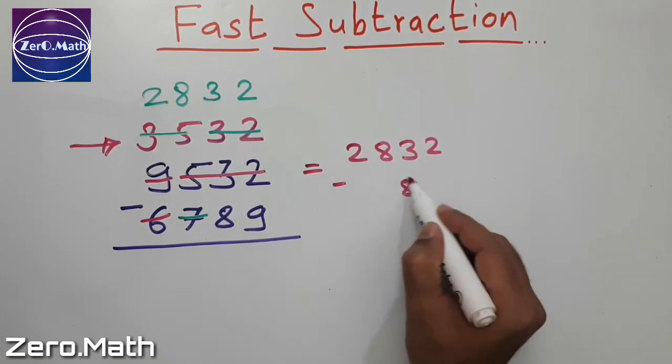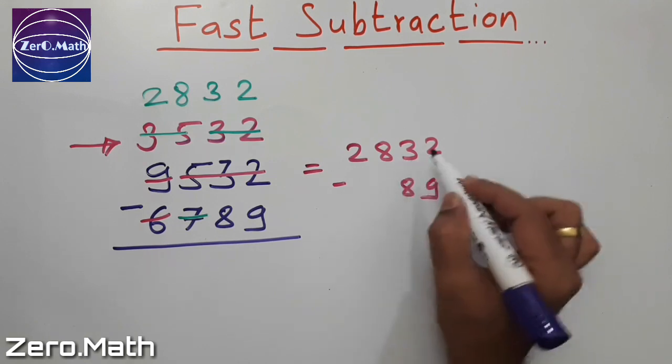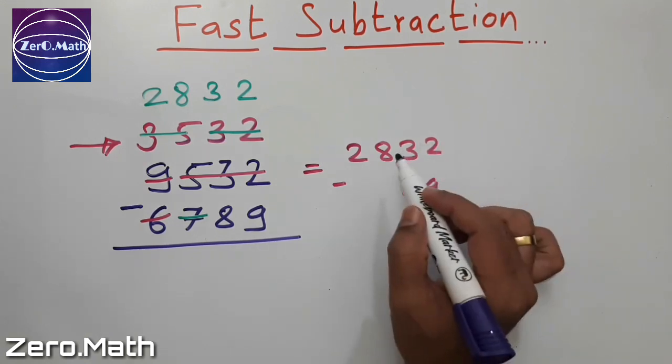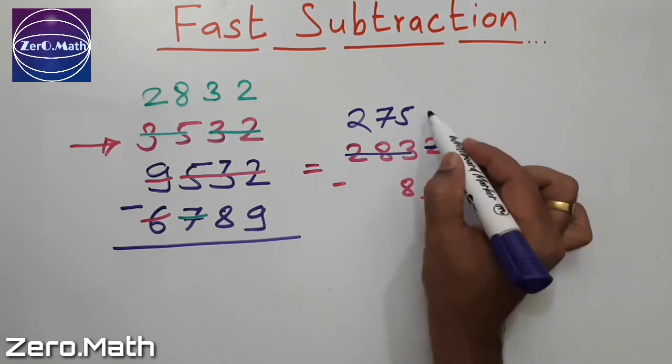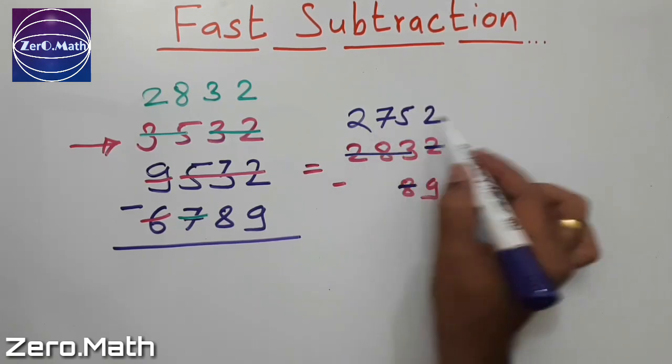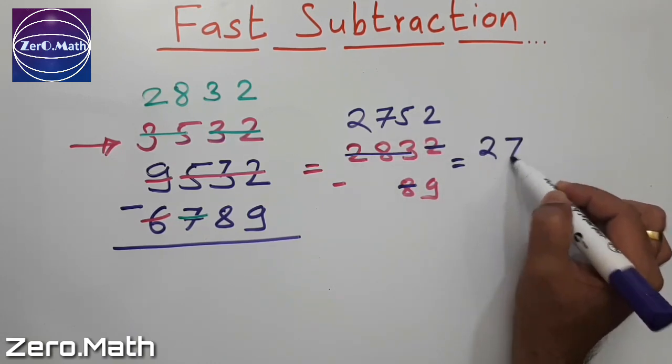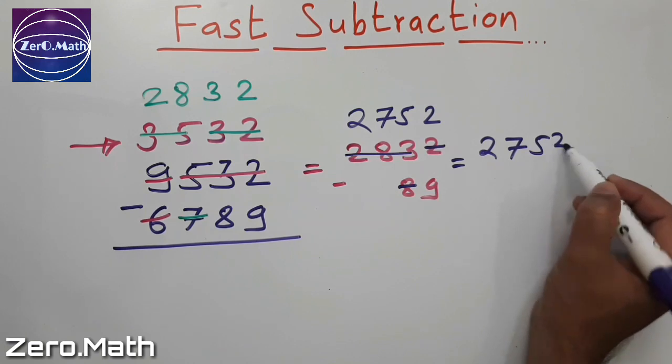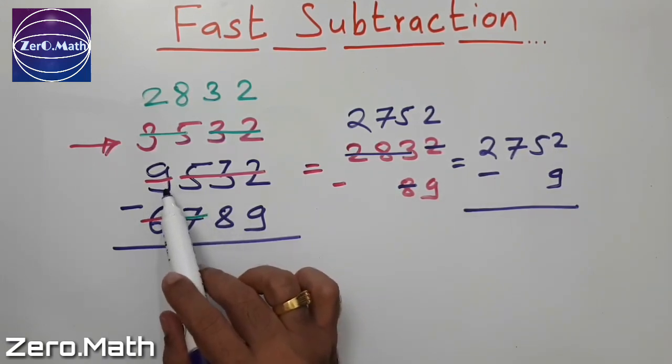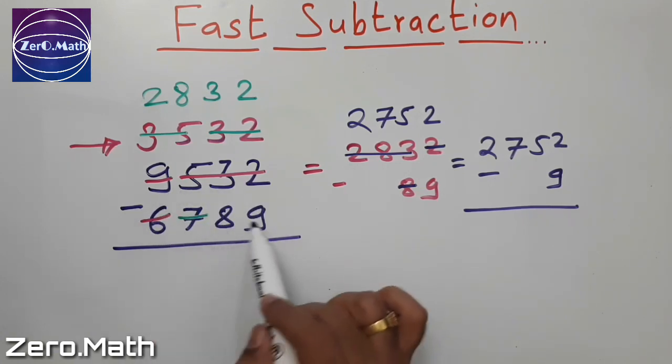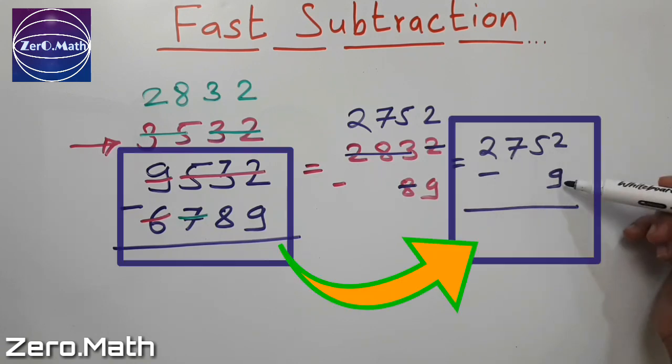2832 minus 89. Now subtract this 8 from 283, which will become 275. This 2 I will write as it is. So 2752 minus 9 is my problem statement now. You can see we have converted our problem statement 9532 minus 6789 into a simplified form, that is 2752 minus 9.